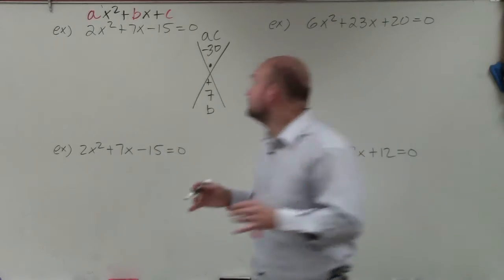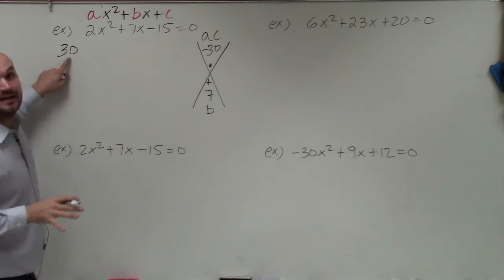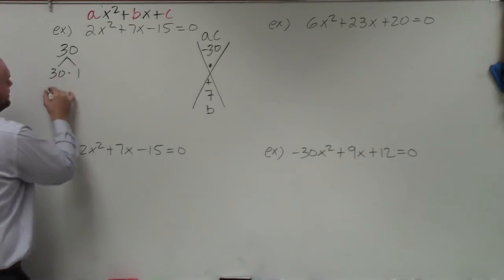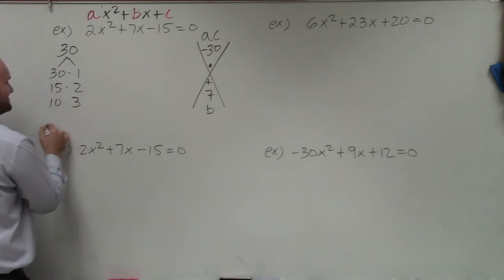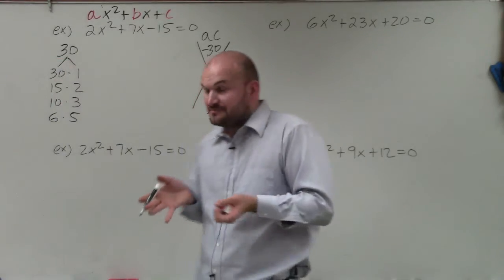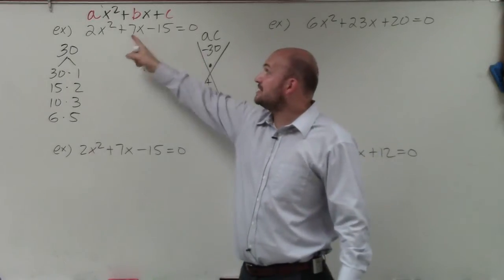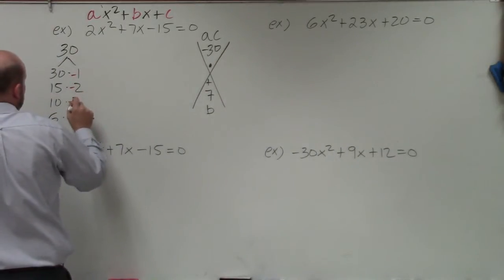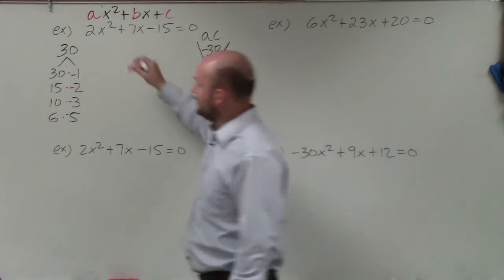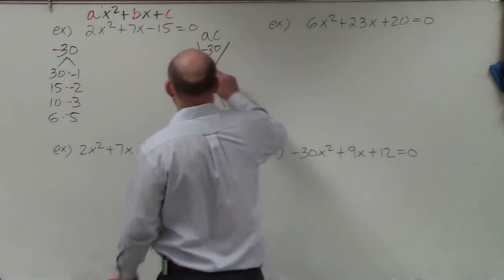We look at a times c, which gives us negative 30, and they have to add to give us b, which is 7. If we can't think of the answer off the top of our head, we can list out the factors of 30: 30 times 1, 15 times 2, 10 times 3, 6 times 5. Since we need negative 30, one factor must be negative. Since they add to a positive number, the larger factor has to be positive and the smaller ones will be negative. The answer is 10 and negative 3.